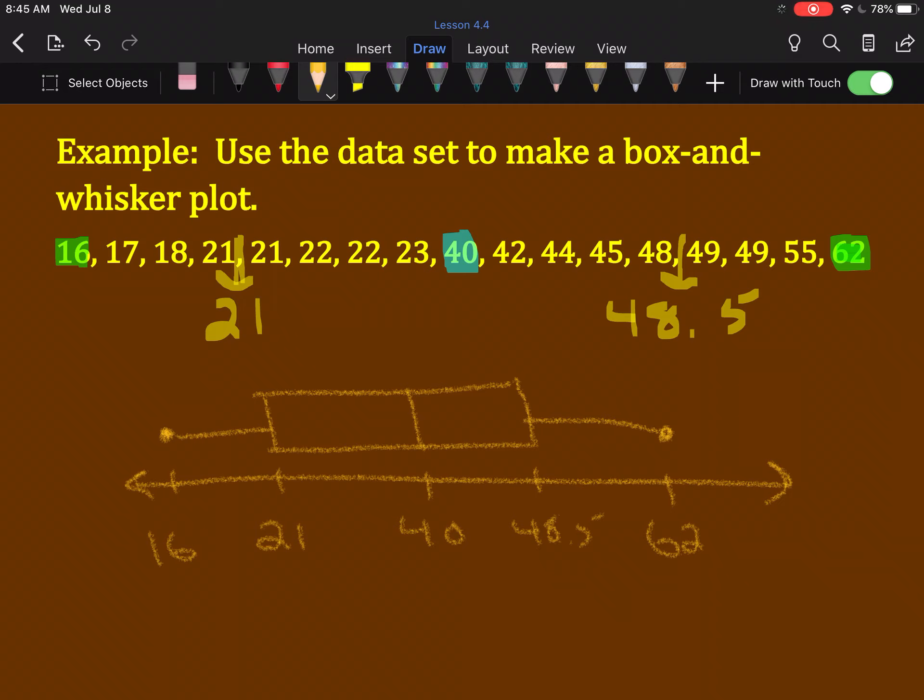There you go. A box and whisker plot. It is made up of five numbers. The lowest number, the first quartile, the median, the third quartile, and the high number.